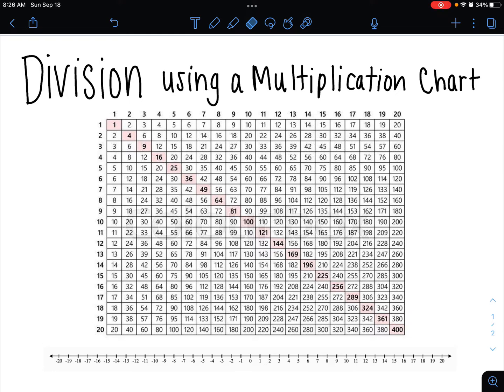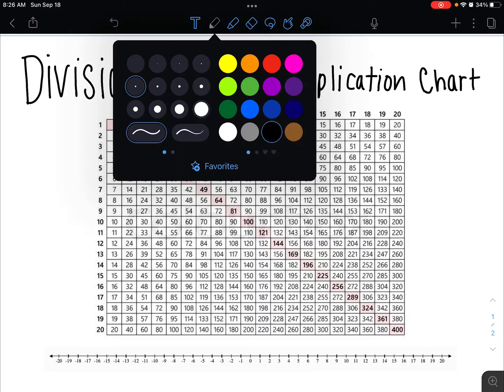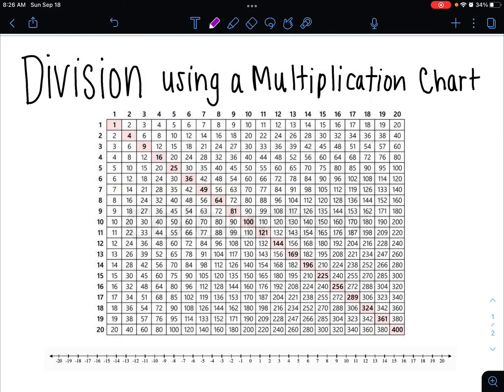So let's think about a division problem, like let's say 48 divided by 12. Now, this can be found in our multiplication chart.